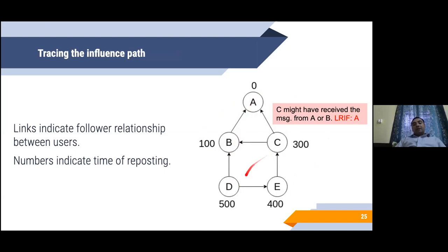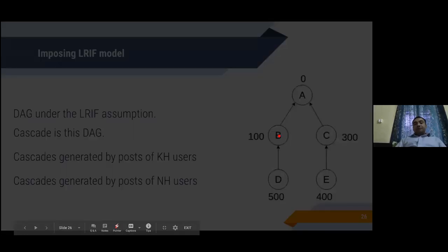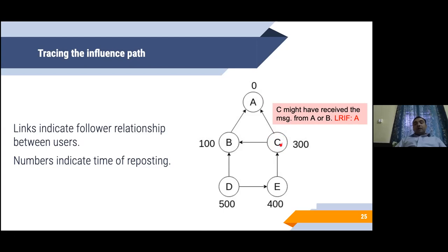I'll explain it through an example. Let's say we have the same graph we saw last time. You have the users A, B, C, D, E, but now these edges are the followership edges. This graph represents that C follows A, C follows B, B follows A and so on. The number on the node indicates the time at which the node or the user has posted the message. A has posted the message at time 0, B at time 100, C at time 300, D at time 500, and E at time 400.